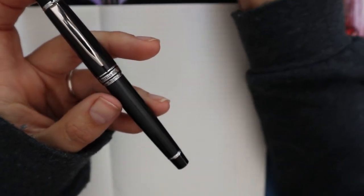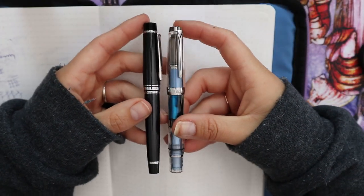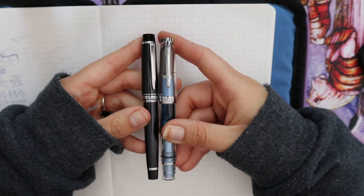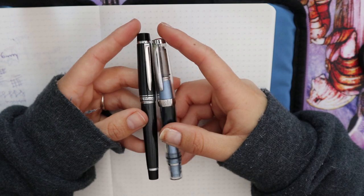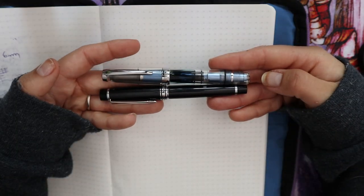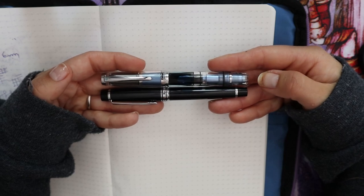Now I grabbed a TWSBI Mini to show you the size difference because this is a tiny pilot. And as you can see, it is slightly bigger than the TWSBI Mini. It is really negligible, so the sizes are very, very similar.